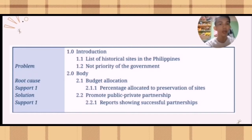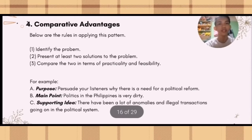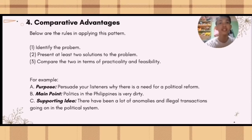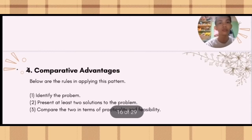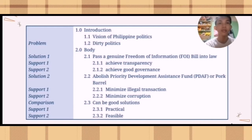For comparative advantages, first identify the problem, second present at least two solutions to the problem, and third compare the two in terms of practicality and feasibility. Its purpose is to persuade your listeners why there is a need for political reform. Its main point is that politics in the Philippines is very dirty. The supporting idea is there have been a lot of anomalies and illegal transactions in the political system. The format has problem, solution one with support one and support two, solution two with support one and support two, and a comparison section.